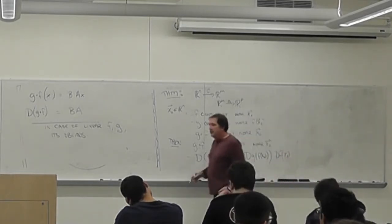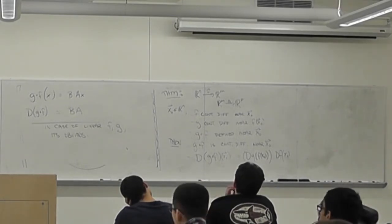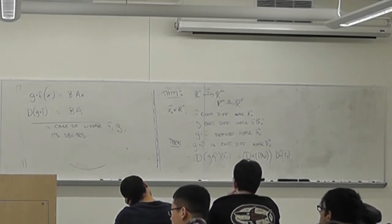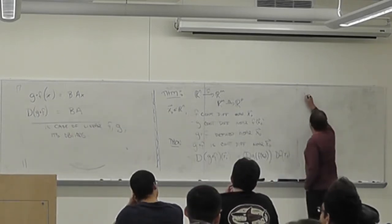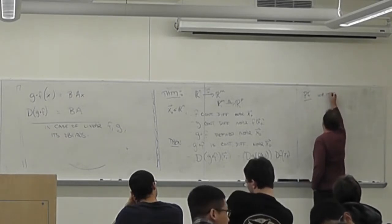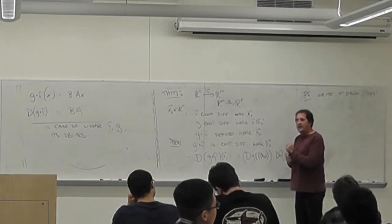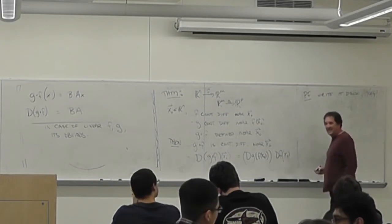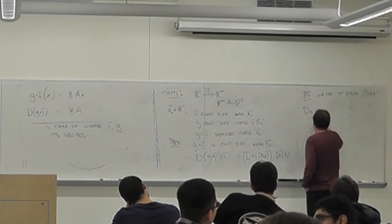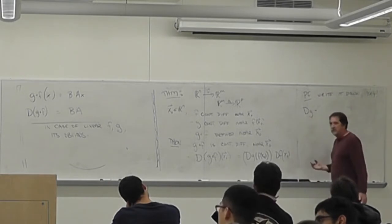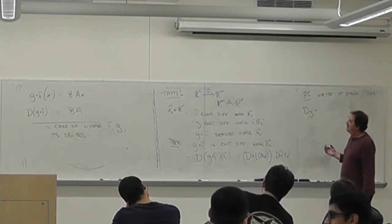Maybe I should do an example. The proof is just: write everything down and sure enough it works. In coordinates, the derivative matrix DG has entries partial of G_i with respect to Y_k evaluated at Y = F(x-naught), and DF has entries partial of F_k with respect to X_j evaluated at X.